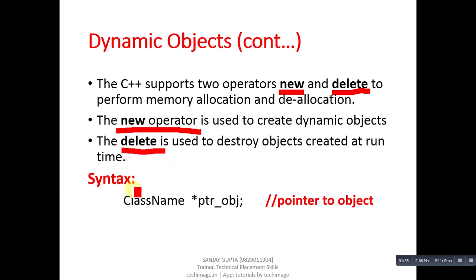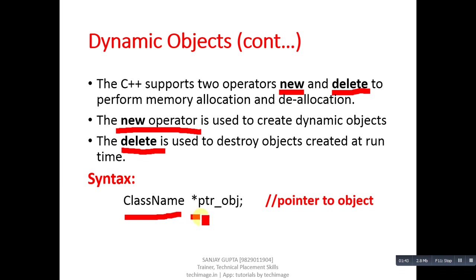To create a pointer to object, you first write the name of the class, then an asterisk sign, followed by the name of the pointer to object.